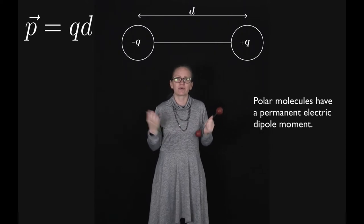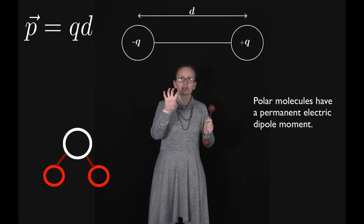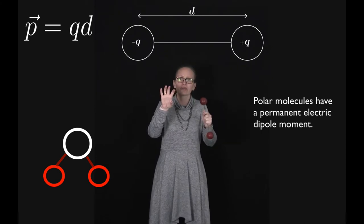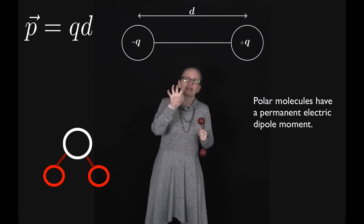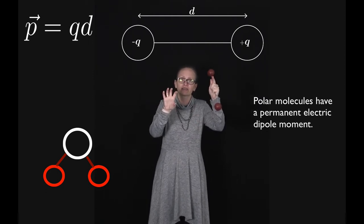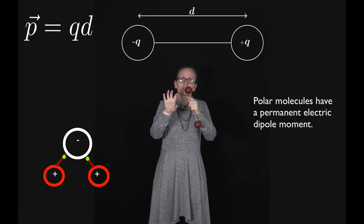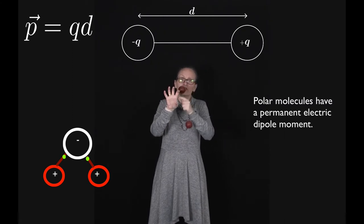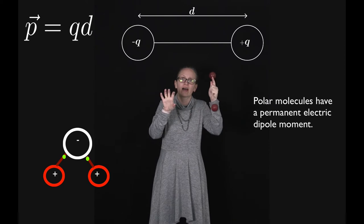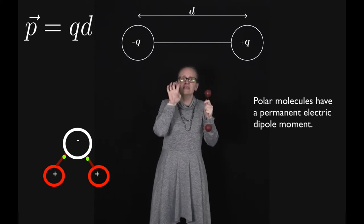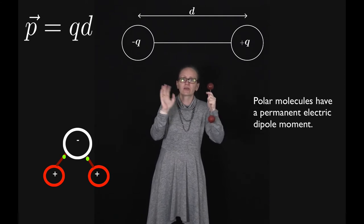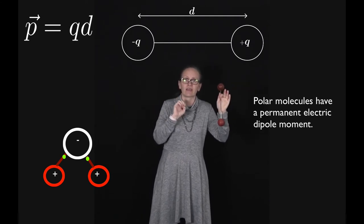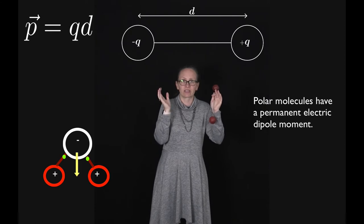Consider the water molecule: it has an oxygen atom and two hydrogens with bonds between them. The oxygen attracts electrons more strongly than the hydrogen does, so in that bond the electrons are usually found closer to the oxygen. This means the oxygen is slightly negative while the hydrogens are slightly positive, giving the molecule a positive end and a negative end — an electric dipole.